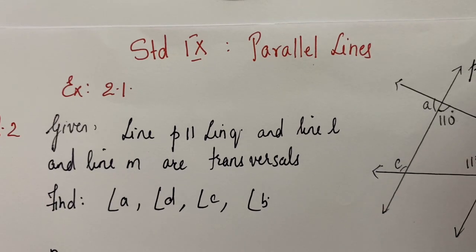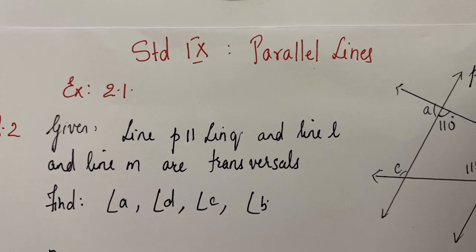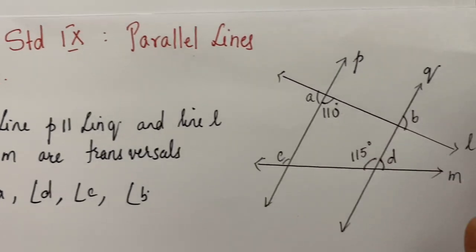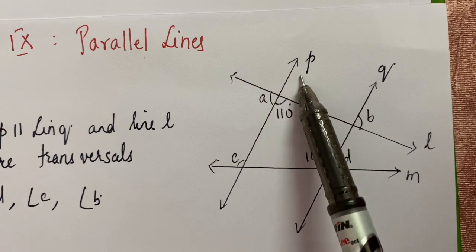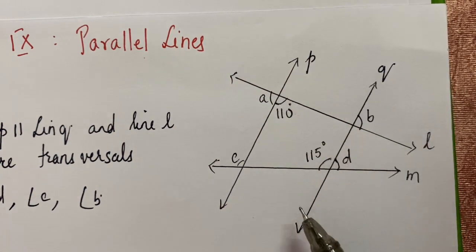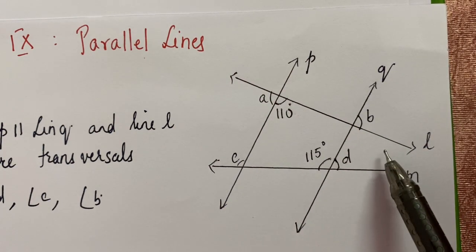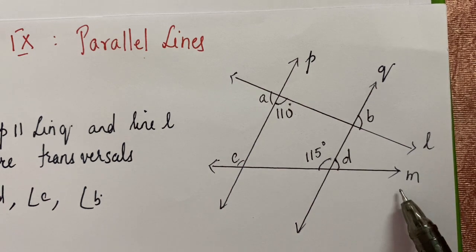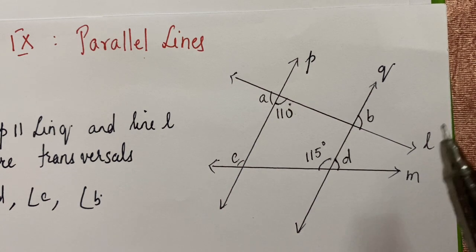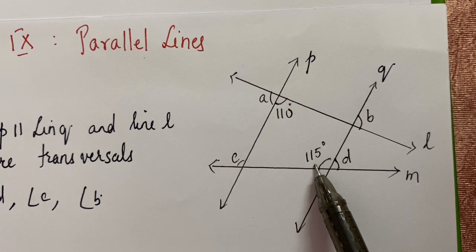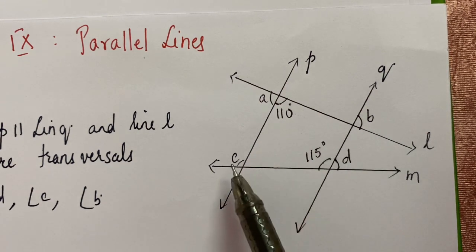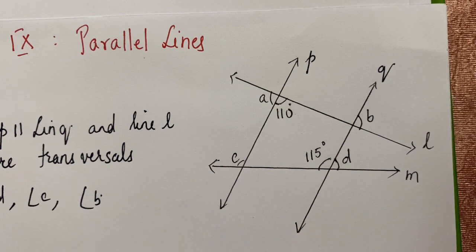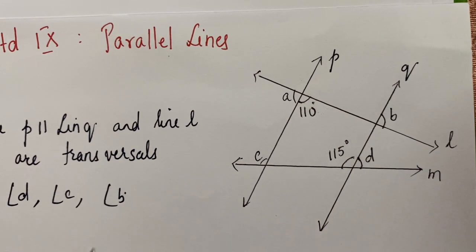Now we will take Exercise 2.1 of parallel lines, question number 2. In this question, you are given that lines P and Q are parallel to each other and there are two transversals — one transversal is N, another is M. You have been given certain measures and you have to find the measures of angle B, angle A, angle C, and angle D using the properties of parallel lines.